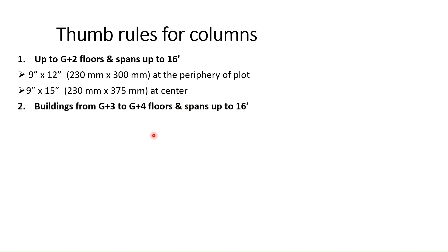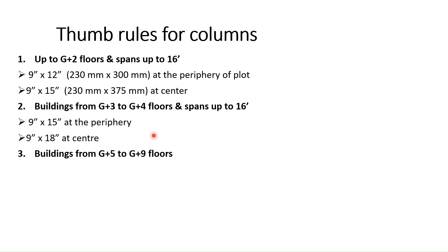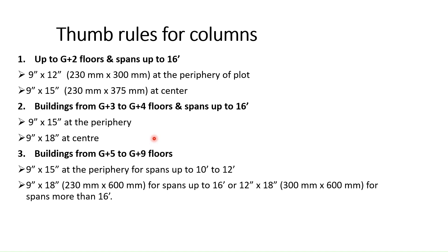For buildings from G plus 3 to G plus 4 floors and spans up to 16 feet, you may consider 9 inch by 15 inch columns at both the periphery and the center. If your building is from G plus 5 to G plus 9 floors, you can consider 9 inch by 15 inch columns at the periphery for spans up to 10 to 12 feet, 9 inch by 18 inch columns for spans up to 16 feet, and 12 inch by 18 inch columns for spans more than 16 feet.